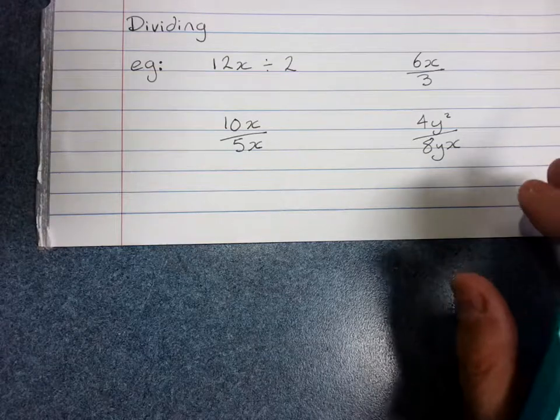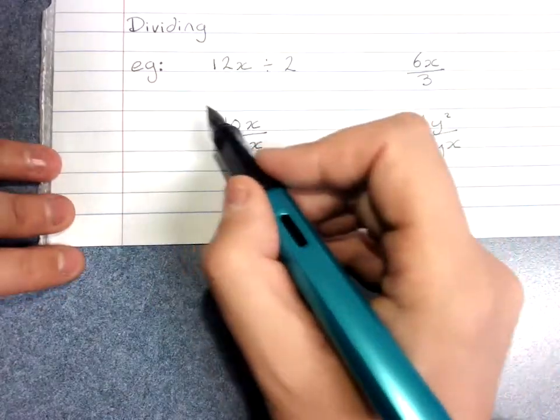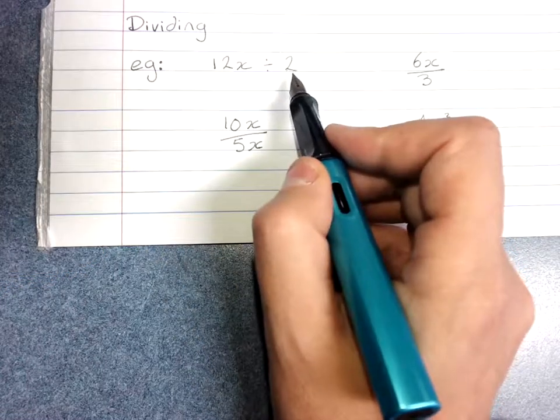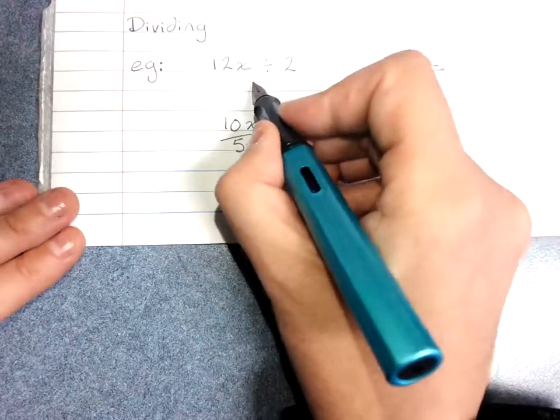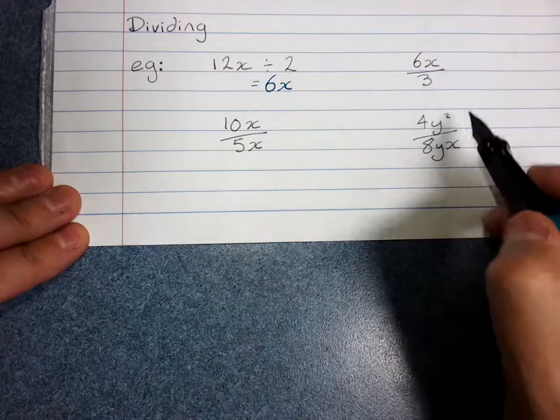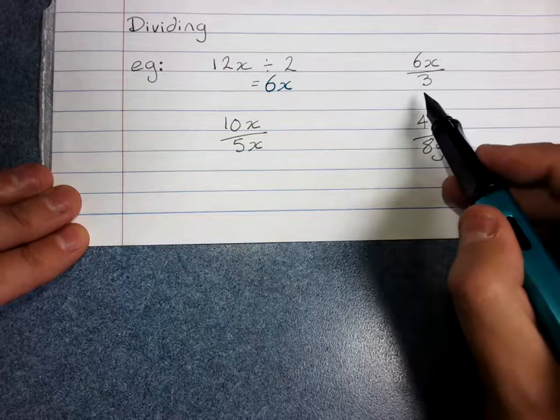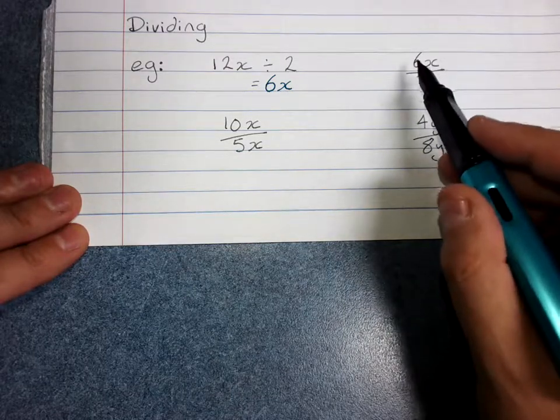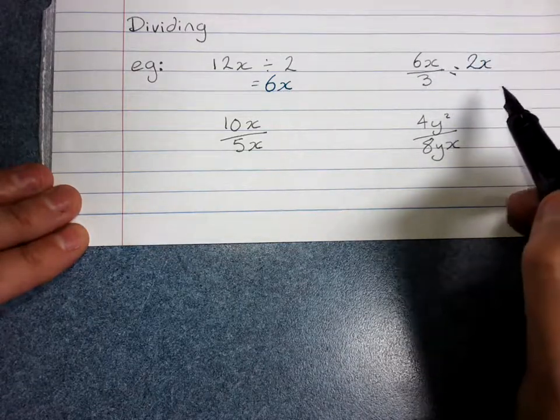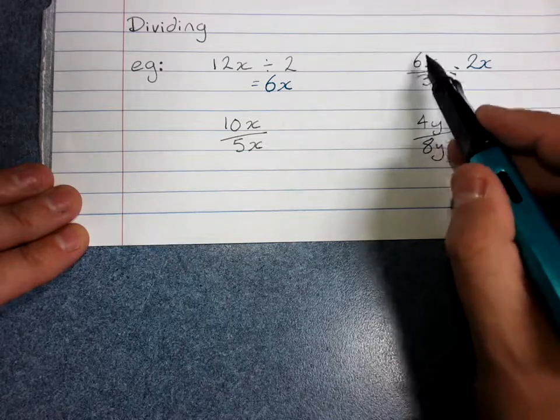And dividing is very similar to multiplying. You divide the numbers out the front and then cancel out any letters that you can. And we'll show you how. 12x divided by 2. Divide the big numbers out the front. 12 divided by 2 is 6. And you've got an x left. Most of the divisions are going to be in fractions. 6x divided by 3. Do 6 divided by 3. That's going to be 2. And you've got x still. You can tell that x goes with the 2 because the big numbers left there.